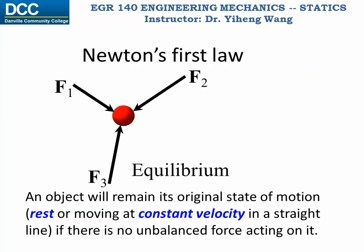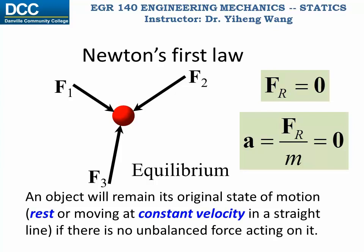As a special case of Newton's second law, when the resultant force acting on the object is zero, that is there is no unbalanced force, then according to Newton's second law, the acceleration is also zero, indicating no change in the velocity. We also call it the state of equilibrium. The object either stays motionless or moves with a constant velocity. In this class, most objects that we deal with are at rest.